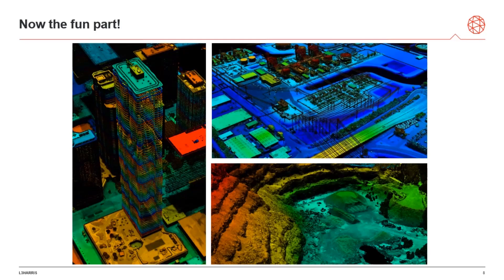In the data sets we are about to show you, you will be able to see all kinds of different 3D features we can collect with LiDAR. These will include buildings, roads, trees, power lines, football stadiums, and even ferris wheels. With that, I will turn it over to my colleague Gabriel Maldonado, who will use a 3D viewer to show you data that we collected in the city of Seattle.